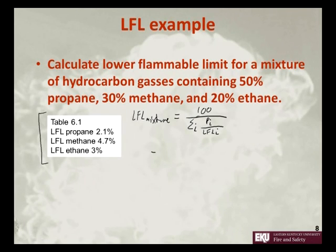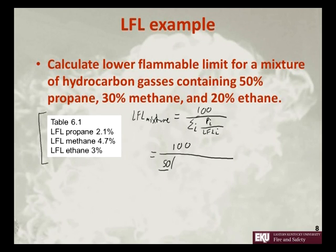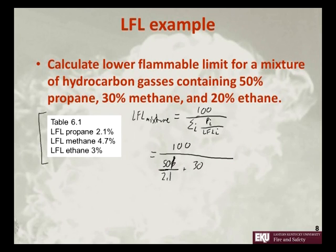So in this case we would have 100 divided by: the percentage of propane, which is 50, divided by the lower flammability limit, which is 2.1; plus 30% methane, whose lower flammability limit is 4.7; plus 20% ethane, whose lower flammability limit is 3%.